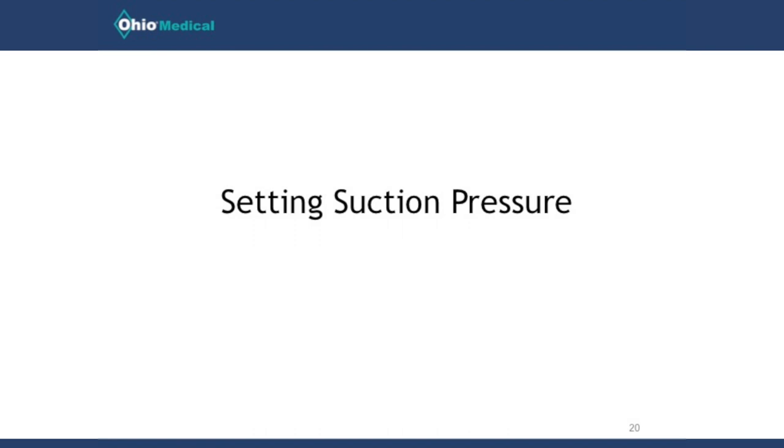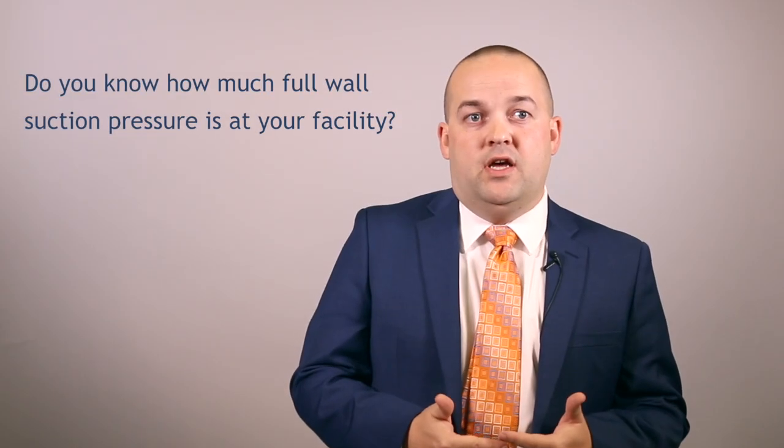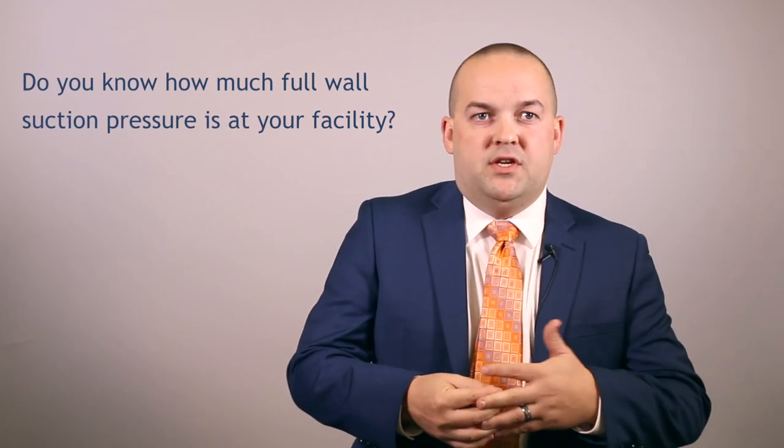Now that we've discussed what suction pressure should be set at, how do we ensure those pressures are set appropriately? Do you know how much full wall suction pressure is at your facility? A lot of caregivers don't really know how powerful the suction can be. From various studies and talking to local hospitals, it can be set as high as negative 635 mmHg — a significant amount of pressure. There's no wonder why suctioning with that much pressure can cause a lot of trauma and bleeding in the tracheal tissue. Patients intubated for several days who have been frequently suctioned will often develop blood-tinged sputum — not from a new pathology, but from trauma caused by repeated suctioning.